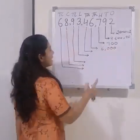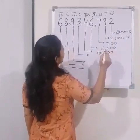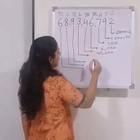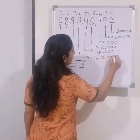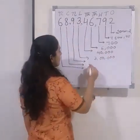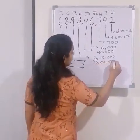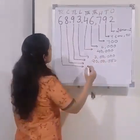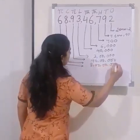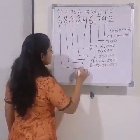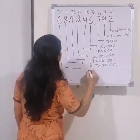4 is at ten-thousands place, so its place value is 40,000. 3 is at lakhs place, so its place value is 3 lakhs. 9 is at ten-lakhs place, so its place value is 90 lakhs. 8 is at crores place, so its place value is 8 crores. 6 is at ten-crores place, so its place value is 60 crores.